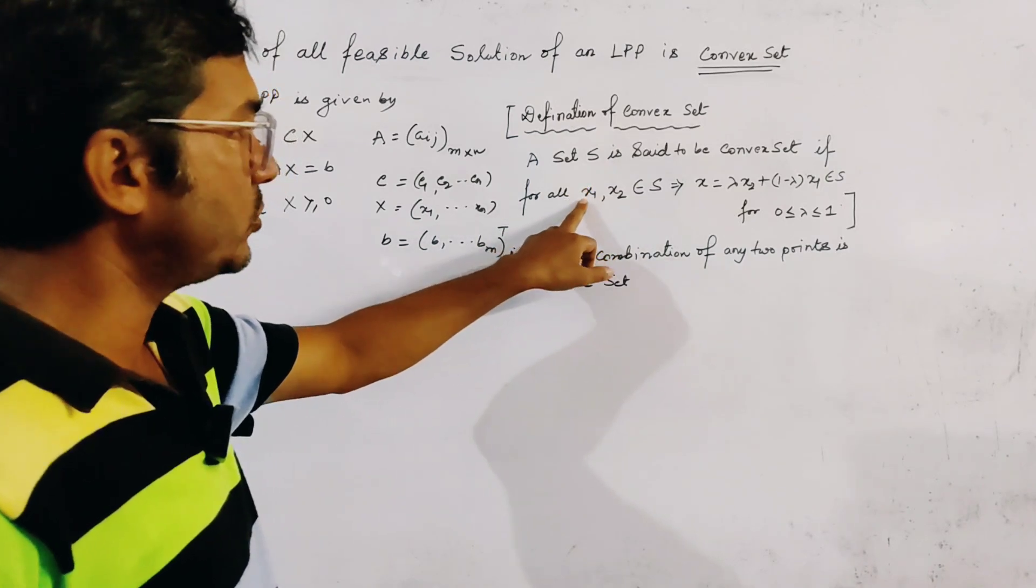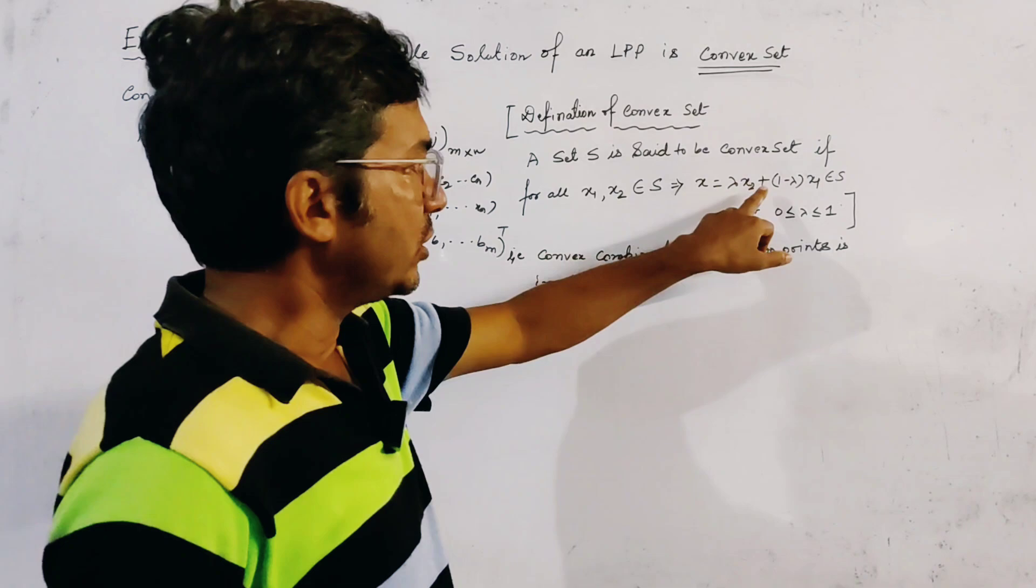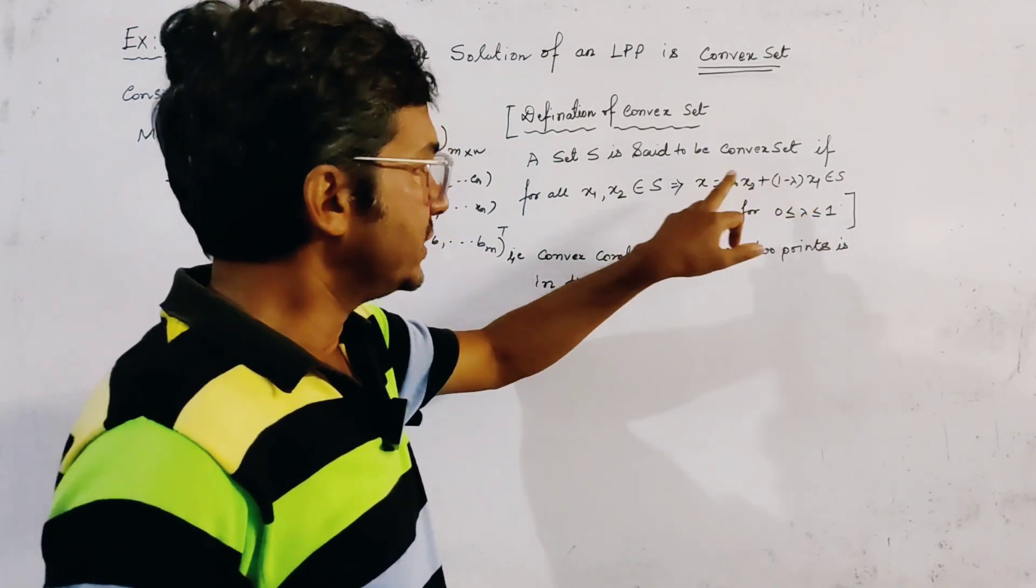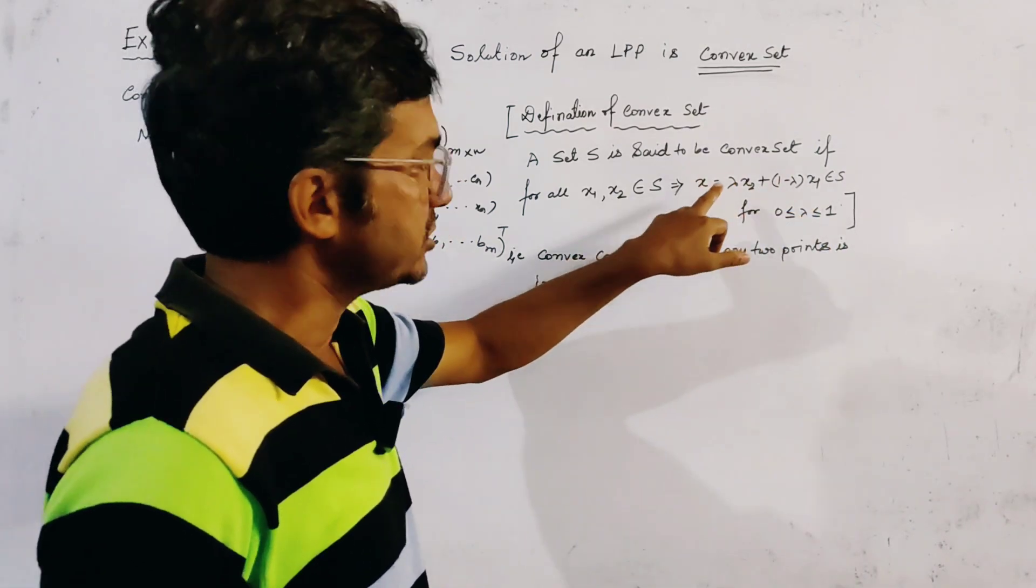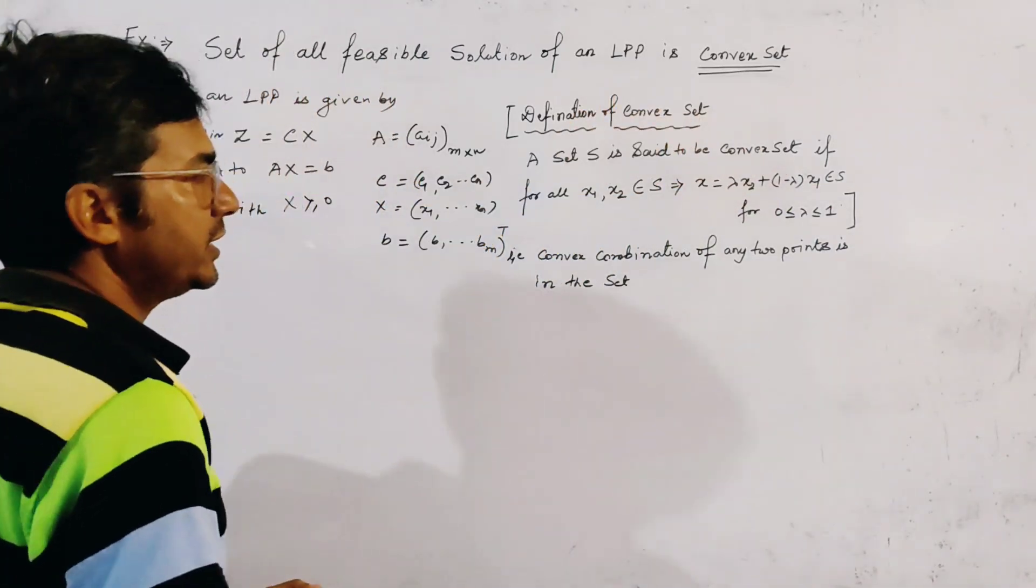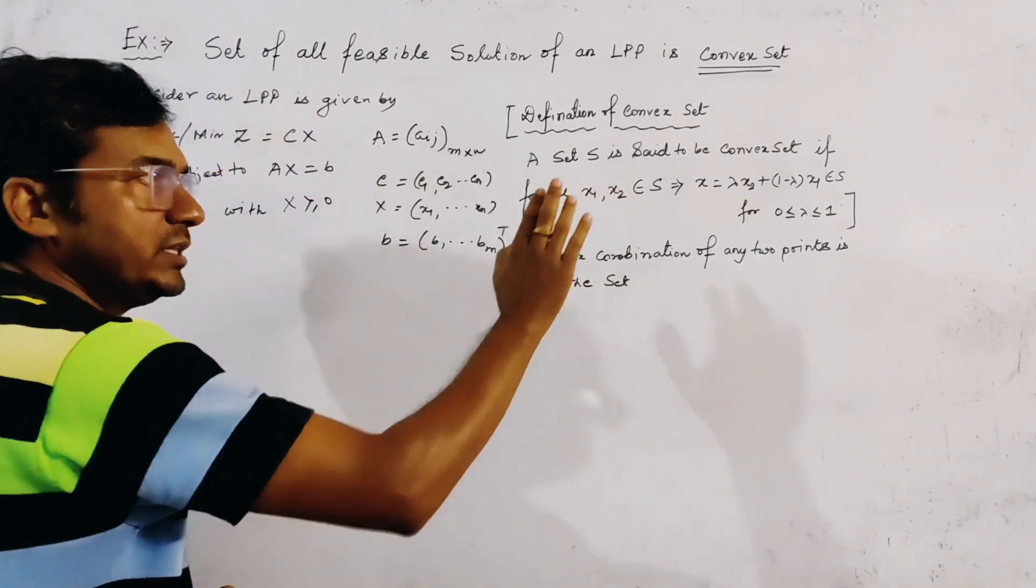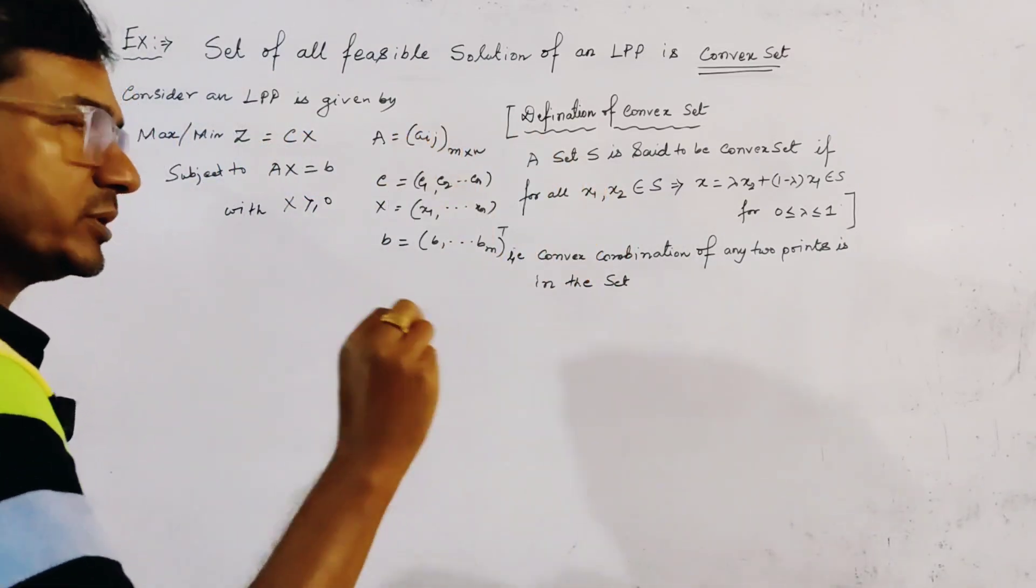That is, if we have to take two points, any two points of this set, and we make the convex combination of these two points, this becomes X and this must be belongs to S. And this definition can also be written as the convex combination of any two points is in the set. Then the set is said to be convex set.